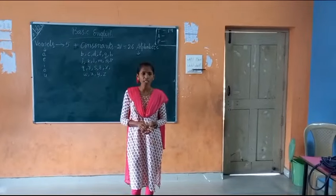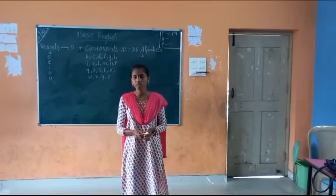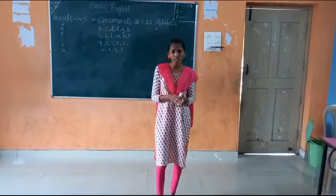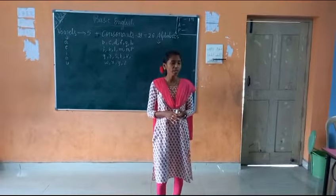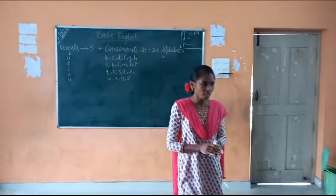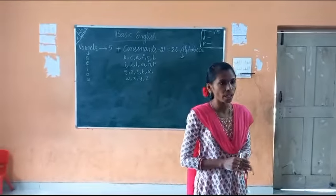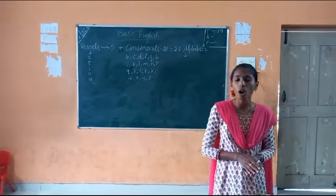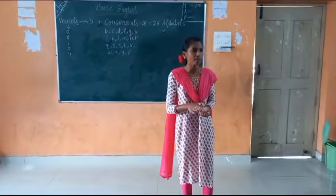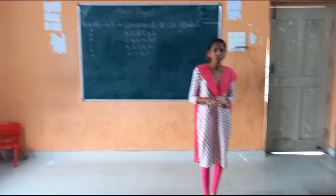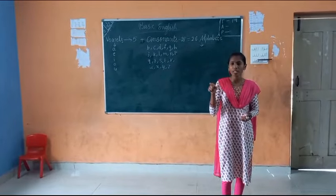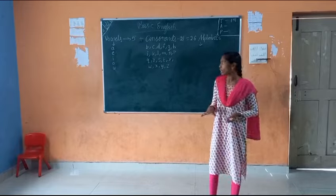Good morning children. Good morning. So as we know in the alphabet we are having all the consonants. So how many letters are there in the English language? 26. And how many are vowels? 5. The remaining 21 are consonants.